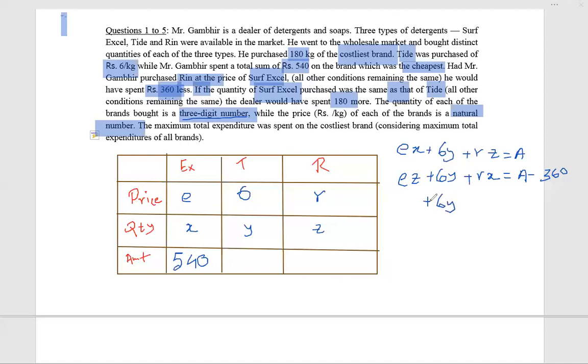Also, 6y remains as 6y. Now two amounts becoming equal. If the quantity of Surf Excel is the same as that of Tide, quantity of Tide is y, so ey plus rz remains rz. Then it will go up by 180. So we have three complicated equations.